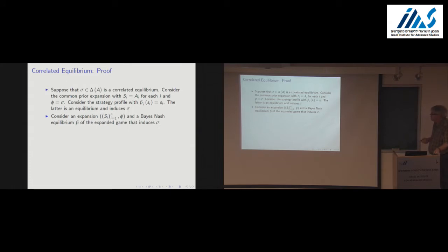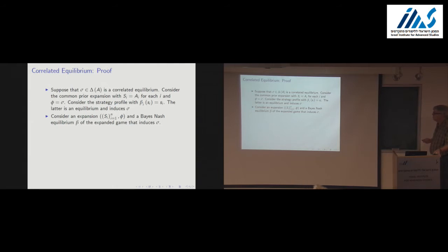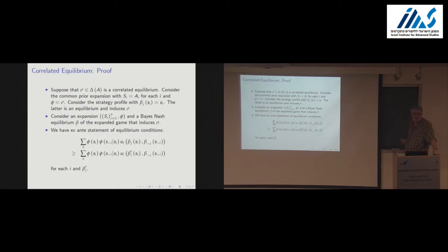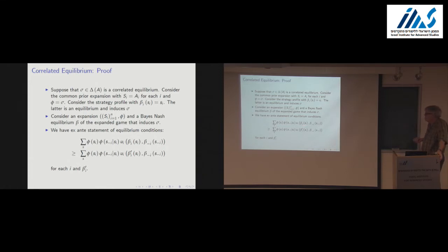There's a tiny bit of content going in the other direction. Consider an arbitrary common prior expansion and a Bayes-Nash equilibrium of that game that induces sigma — I want to show sigma is a correlated equilibrium. We write down the ex-ante equilibrium conditions for beta. Before I've observed my signal, is it the case that I want to follow strategy beta-i? We take the expectation over all signals, written as probability of type s-i times the conditional probability.